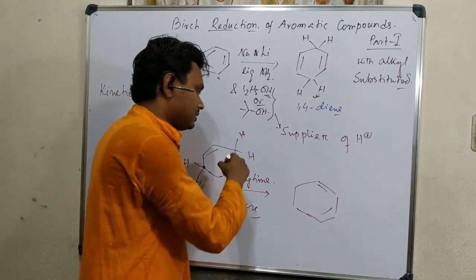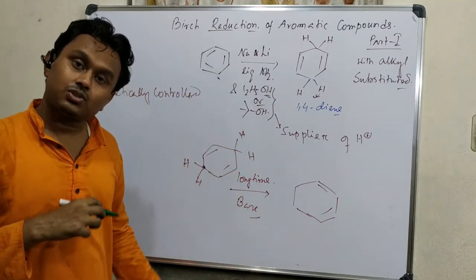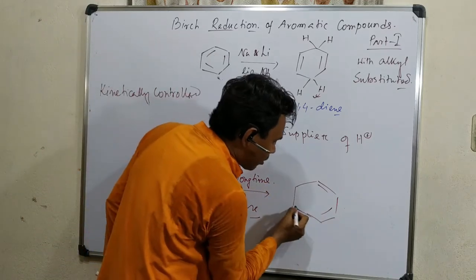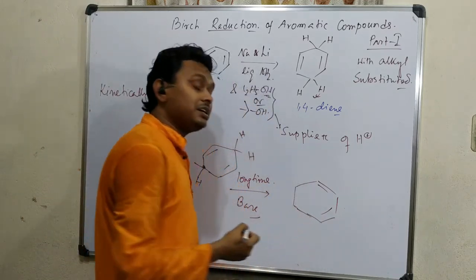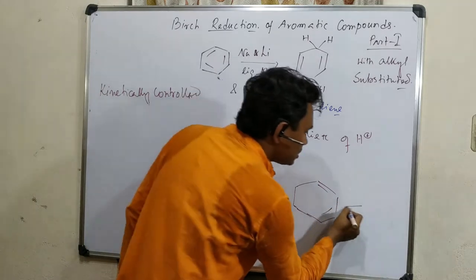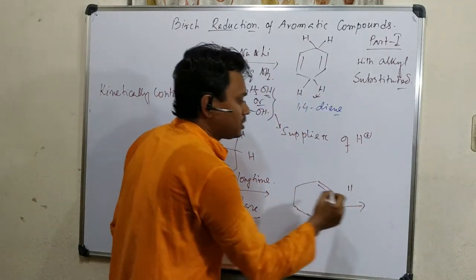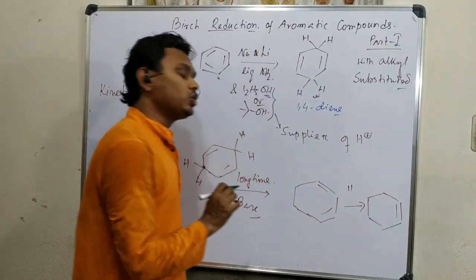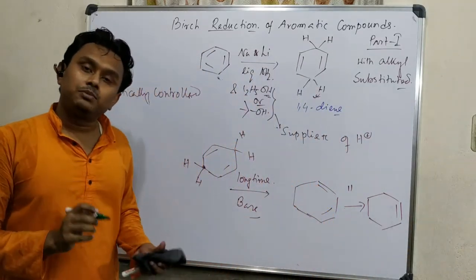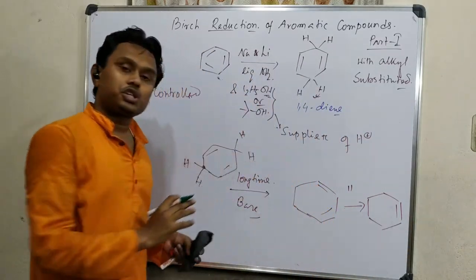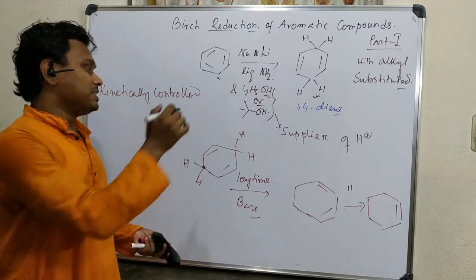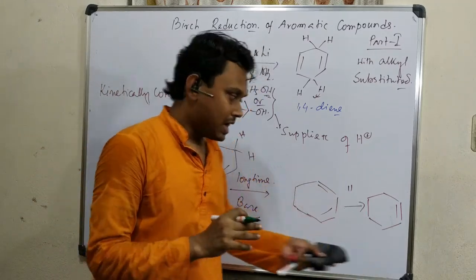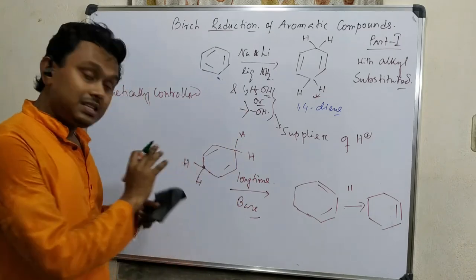Second option: if the temperature is increased or the reaction is prolonged, the conjugated dienes can further reduce using Birch reduction to produce a single monoene. So depending on the conditions, we can have an unconjugated diene, a conjugated diene, or a monoene.